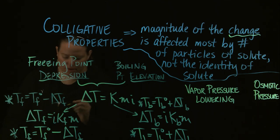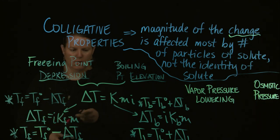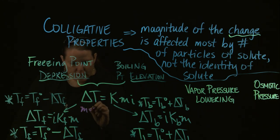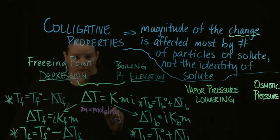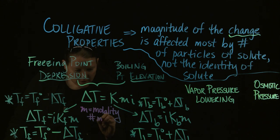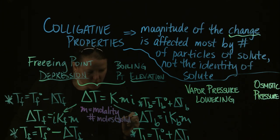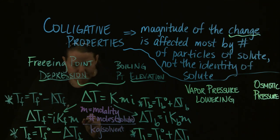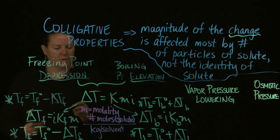M is molality. Molality is a concentration value — it's the number of moles of solute over kilograms of solvent.